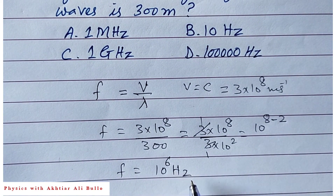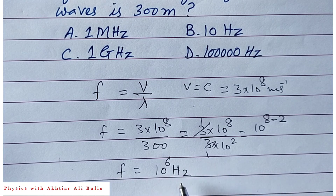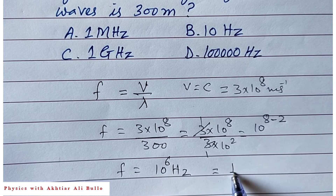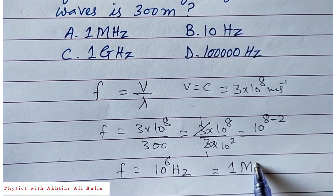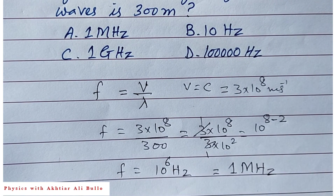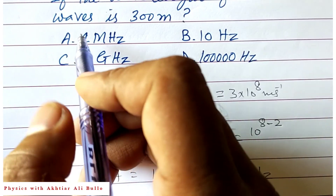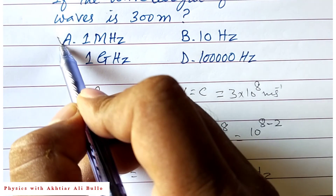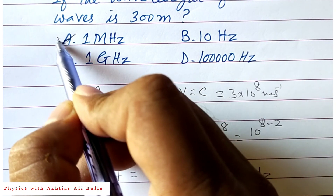As we know, 10⁶ hertz is equal to 1 megahertz. So the correct option is A: 1 megahertz.